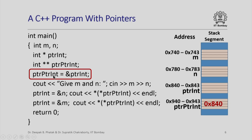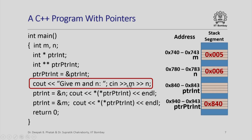When we execute the statement 'pointer-pointer-int = &pointerint', we find the address of the first byte allocated to pointerint, which is hex 840, and store that in the four bytes allocated for pointer-pointer-int. After that, we read in m and n. We are trying to answer what happens when m is 5 and n is 6, so the values 5 and 6 get stored in the four bytes allocated for m and n respectively.